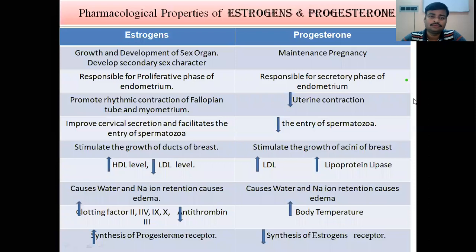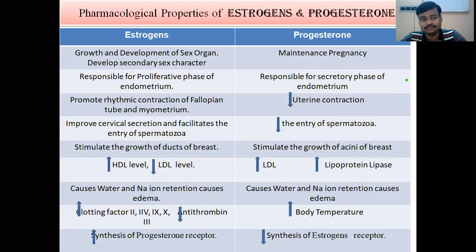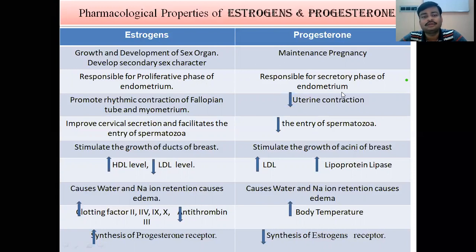Estrogen and progesterone have different pharmacological properties. Estrogen is responsible for the growth and development of sex organs and equally responsible for the development of secondary sexual characteristics. Progesterone has a main role in the maintenance of pregnancy. Estrogen is responsible for the proliferative phase of the endometrium, whereas progesterone is responsible for the secretory phase of the endometrium.